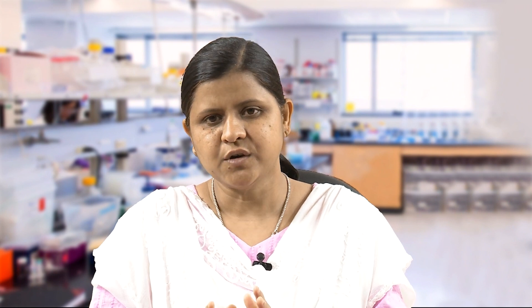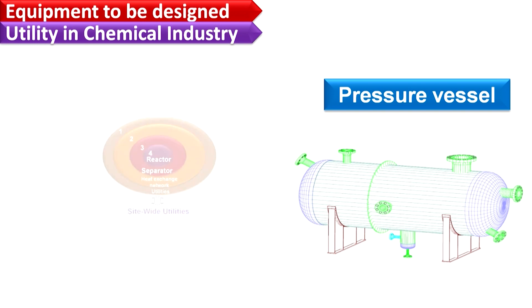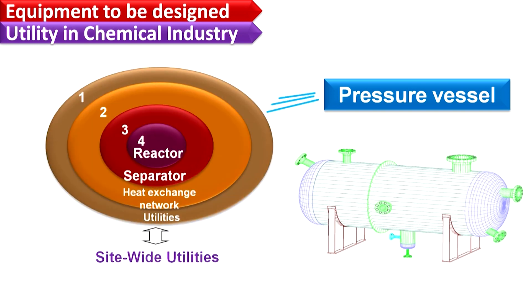The equipment to be designed in this course is the pressure vessel, which is defined as all vessels and pipelines used for carrying, storing, or receiving steam, gases, or liquids at pressures above or below atmospheric pressure. Therefore, while designing the pressure vessel, you can basically design reactors, separators, heat exchangers, etc., which are associated with a chemical process or chemical industry.